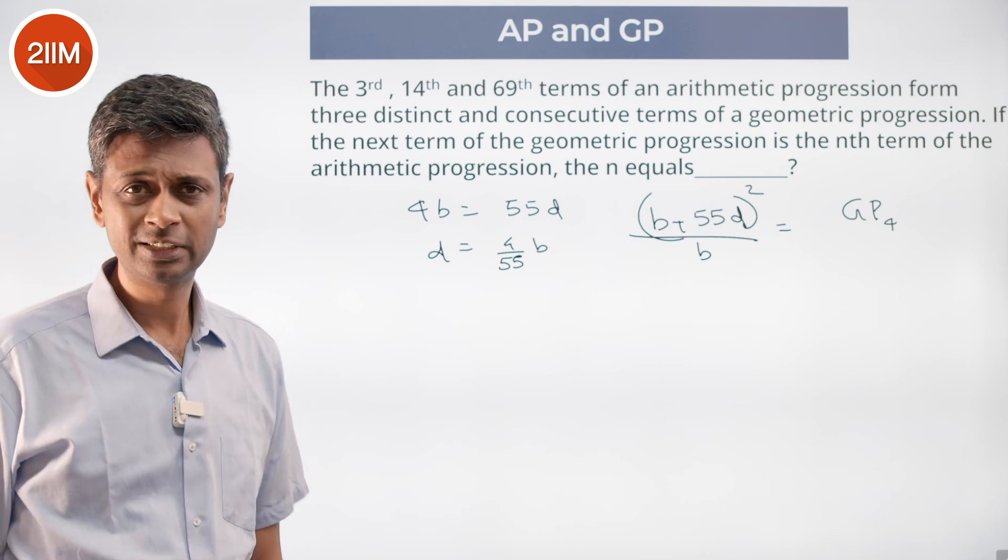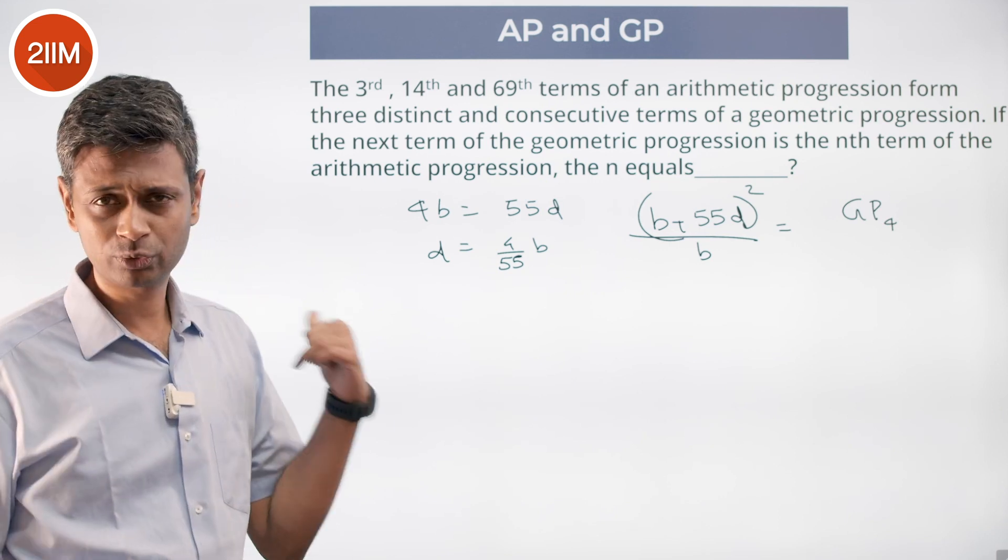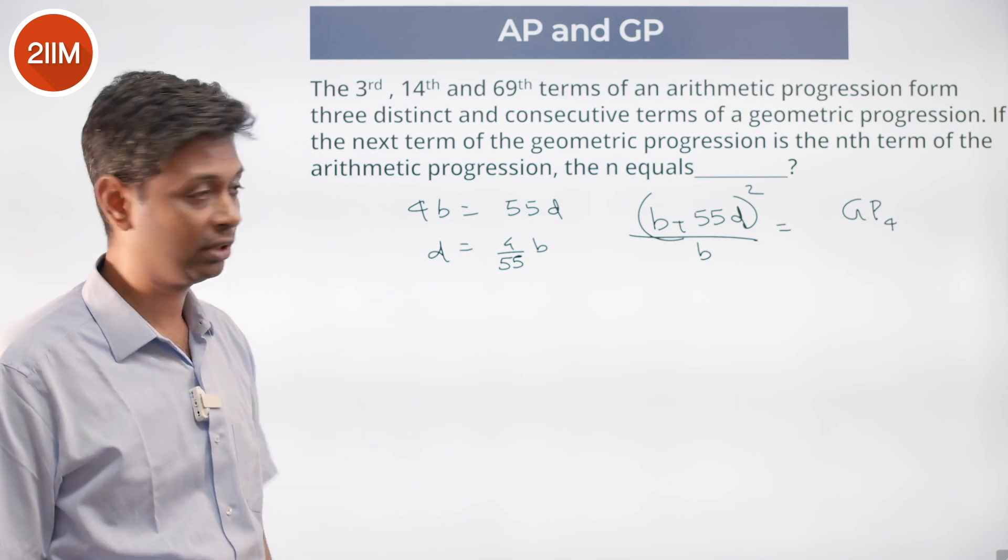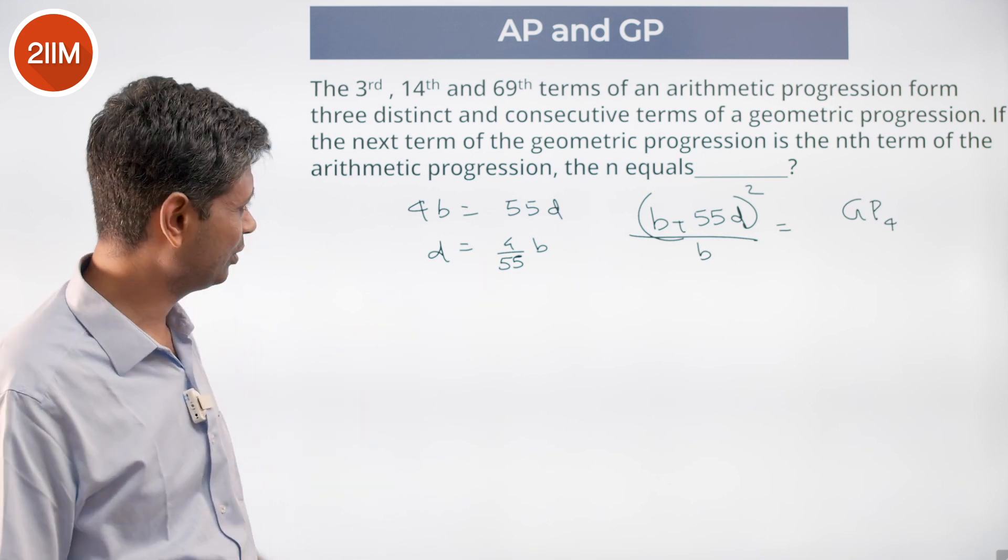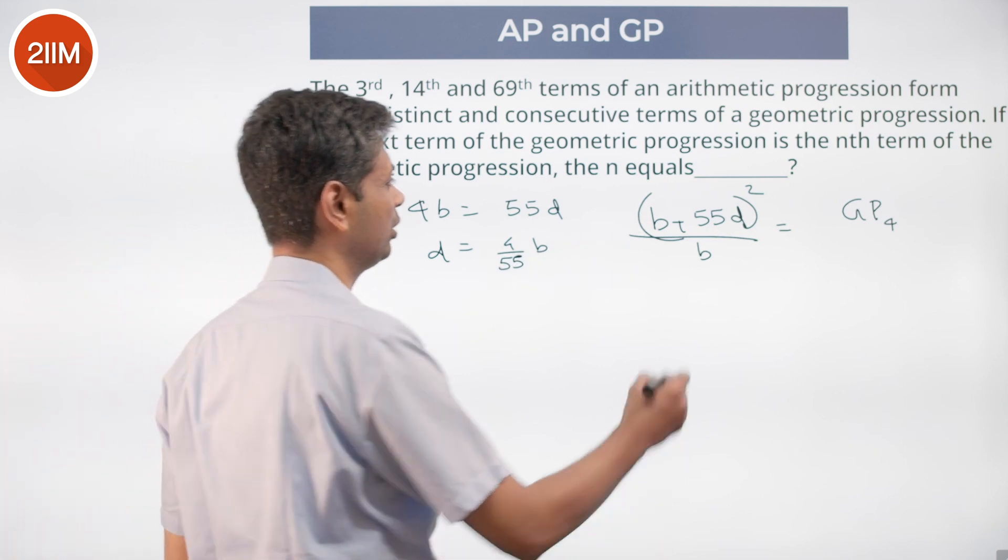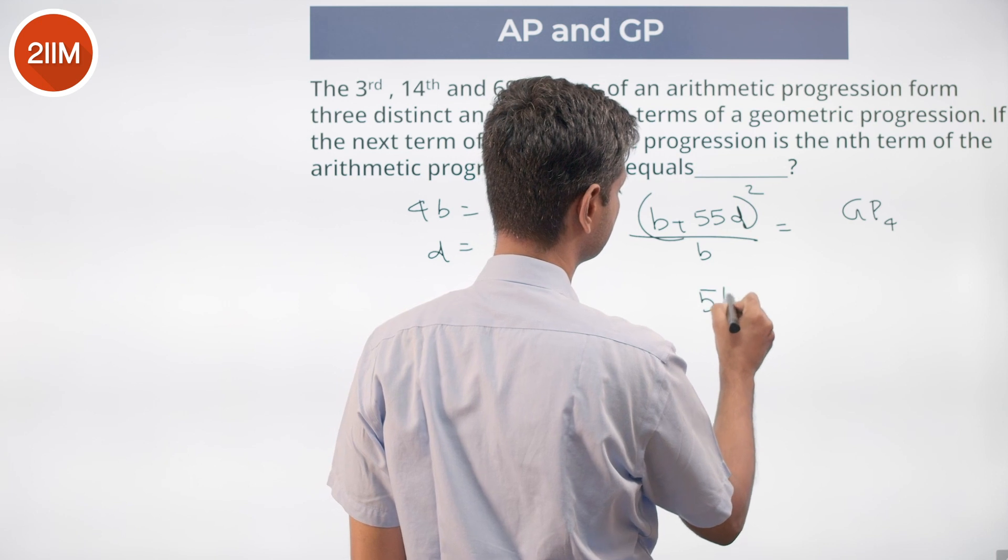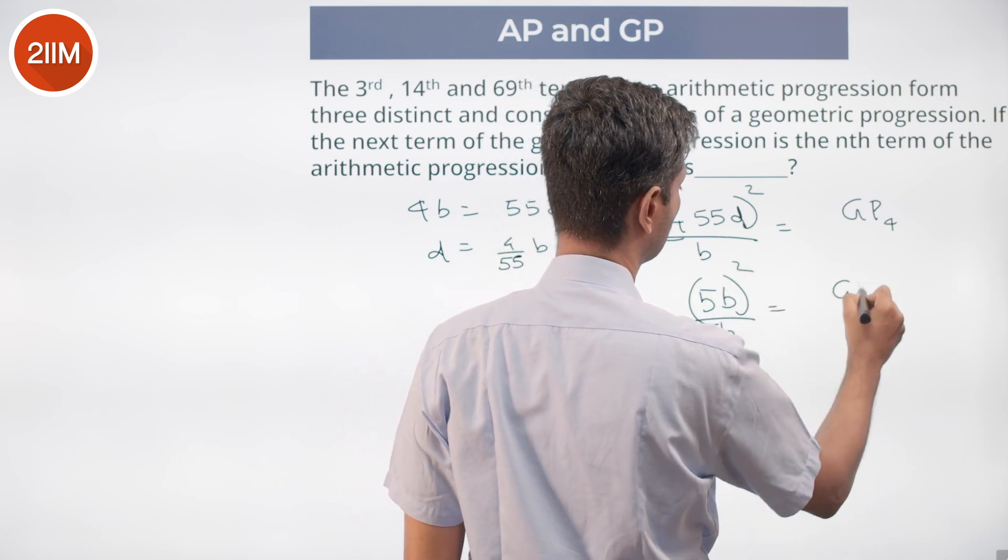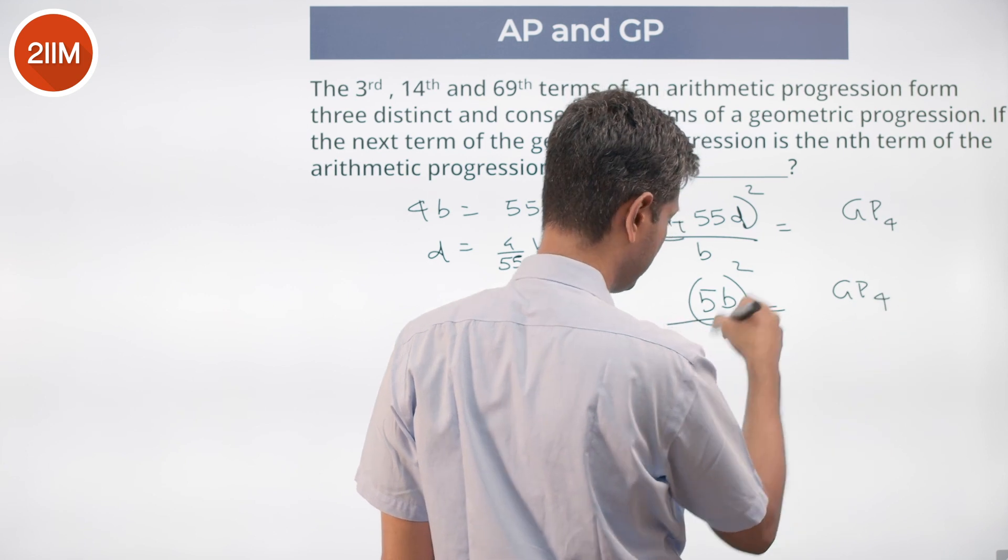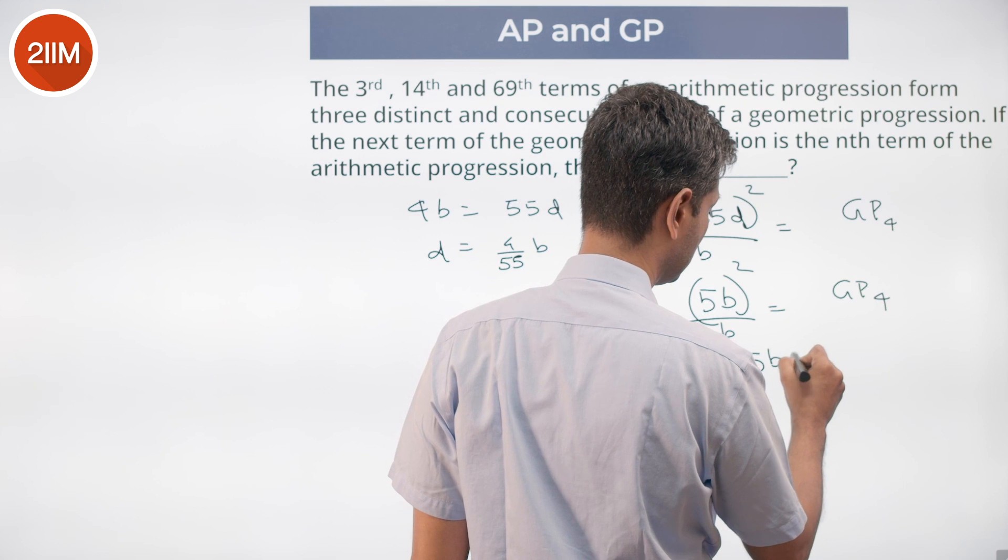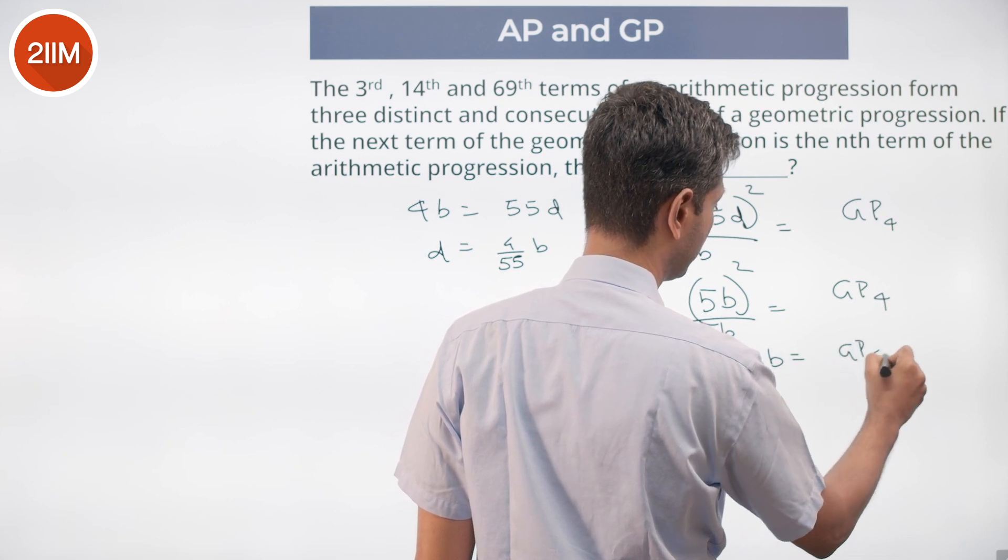We need to find this and then bring it back to this form. b plus 55d the whole square, d is 4 by 55b which is nice. 4 by 55 into 55 makes it 4b. This is 5b the whole square by b. This is the fourth term of the gp. 25b square by b. This is 25b.